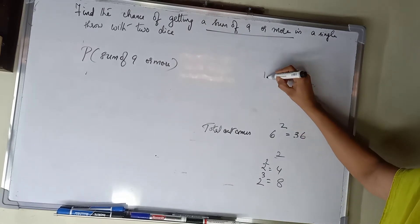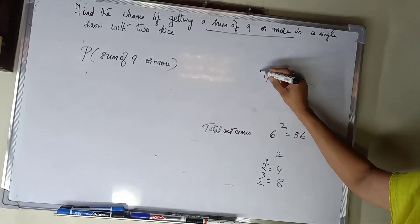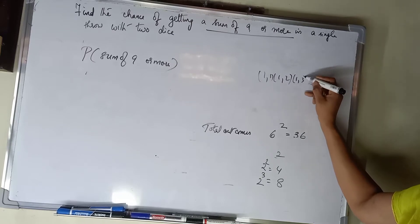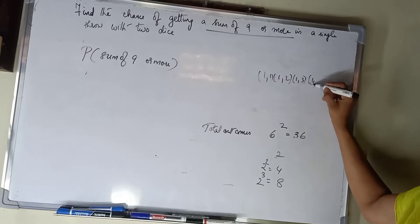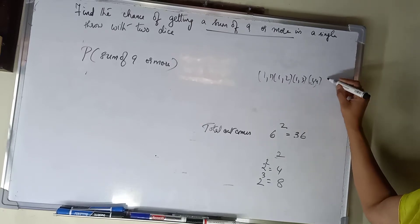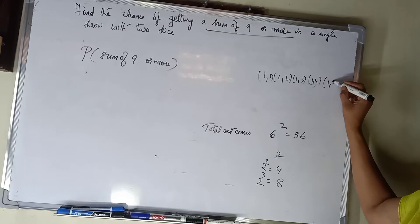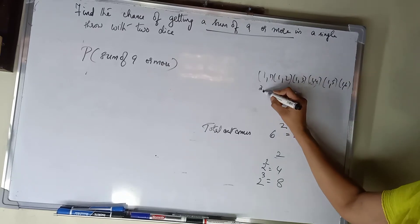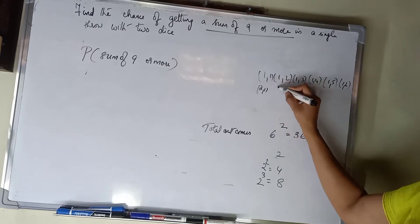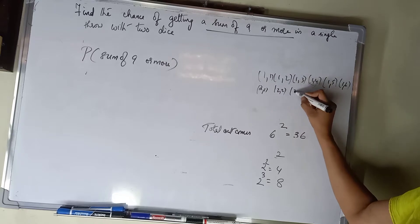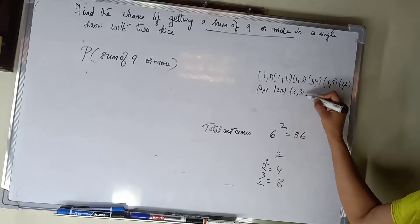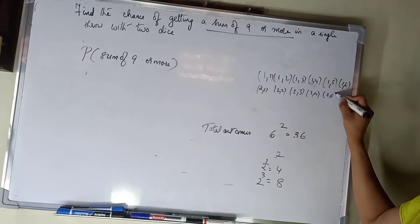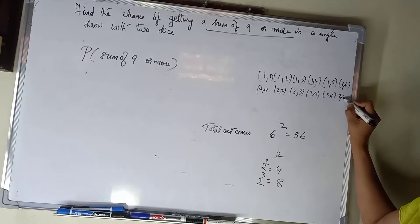We start listing the sample space. First die shows 1: (1,1), (1,2), (1,3), (1,4), (1,5), (1,6). Then first die shows 2: (2,1), (2,2), (2,3), (2,4), (2,5), (2,6).